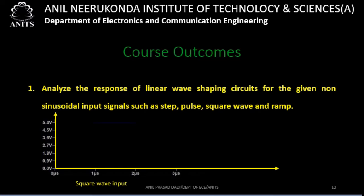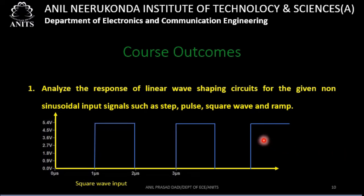The last signal we are going to apply to either of the linear wave shaping circuits — RC low pass filter and RC high pass filter — is a square waveform. I don't want to represent it mathematically because I want to use known concepts. If I know how to find the response due to a step input or a pulse input, that is enough to find the response due to any square wave input.